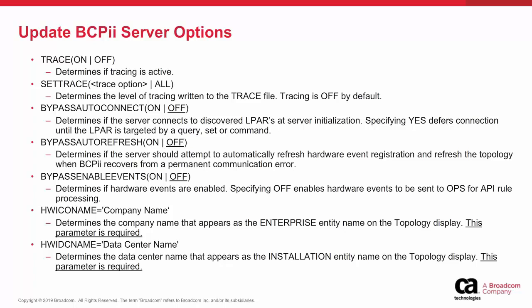Bypass Auto Refresh determines if the server should attempt to automatically refresh hardware event registration and refresh the topology when BCPII recovers from a permanent communications error. Bypass Enable Events determines if hardware events are enabled. Specifying Off enables hardware events to be sent to Ops for API rule processing. HWI co-name determines the company name that appears as the enterprise entity name on the topology display — this parameter is required. HWI DC name determines the data center name that appears as the installation entity name on the topology display — this parameter is also required.